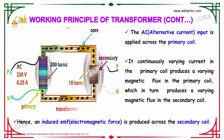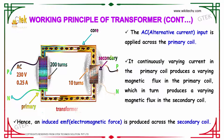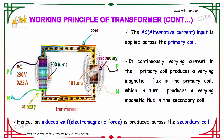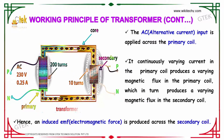Now we will talk about the working principle of the transformer. The AC input is applied across the primary coil. The continuously varying current in the primary coil produces a magnetic flux, which is happening in the primary coil. In turn, it produces a magnetic flux in the secondary coil. Hence, an induced EMF is produced across the secondary coil, which can be taken out.